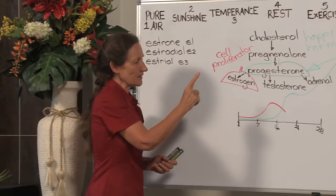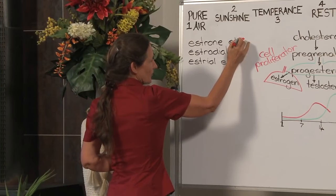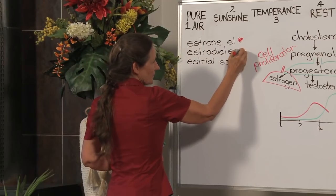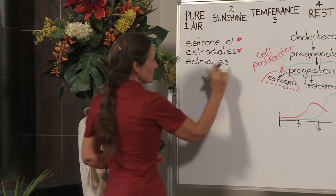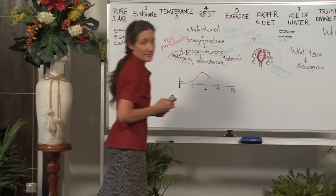Whereas estrogen is not one hormone, estrogen is a family of three. There is estrone, often called E1, and it has strong cell proliferator action. Estradiol, often called E2, also has strong cell proliferator action. Whereas estriol is the delicate hormone. It is estriol levels that rise in pregnancy, sometimes called the protective estrogen.